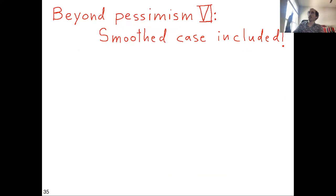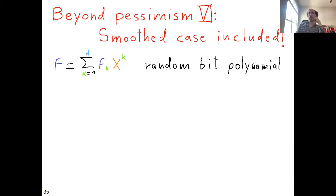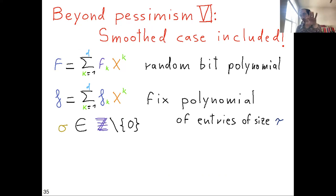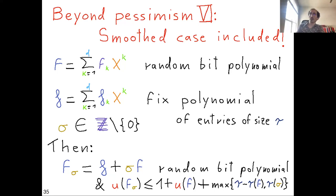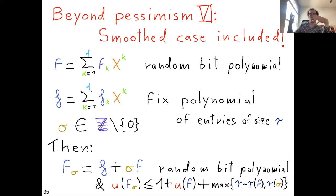Importantly, the model also includes the smoothed case: given a fixed polynomial plus integer noise of magnitude sigma, the resulting polynomial is a random bit polynomial whose uniformity is bounded by a constant plus some terms depending on the difference in bit size between the fixed polynomial and the noise. So the smoothed analysis framework fits naturally within this general model.